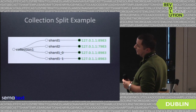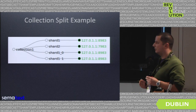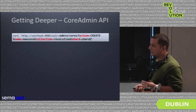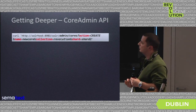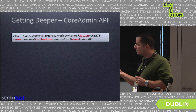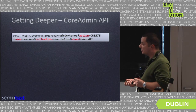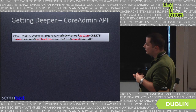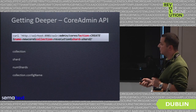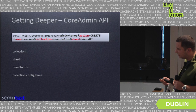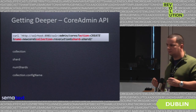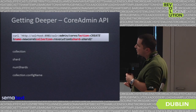In addition to that, the collection API is built on top of the core admin API, so we can use the core admin to create shards ourselves if we want full control. It can take parameters like collection name, the shard ID, the total number of shards, and the collection config name. You won't use the core admin API very much, but it's useful sometimes.